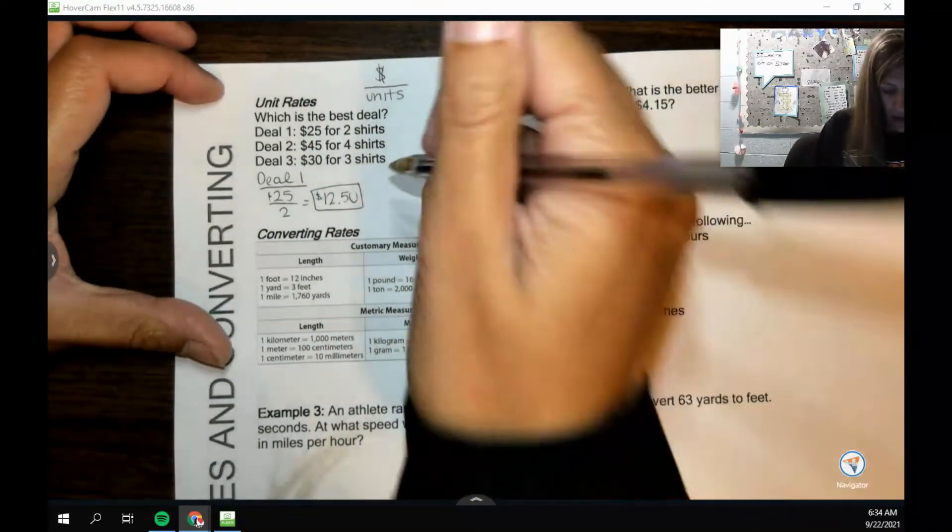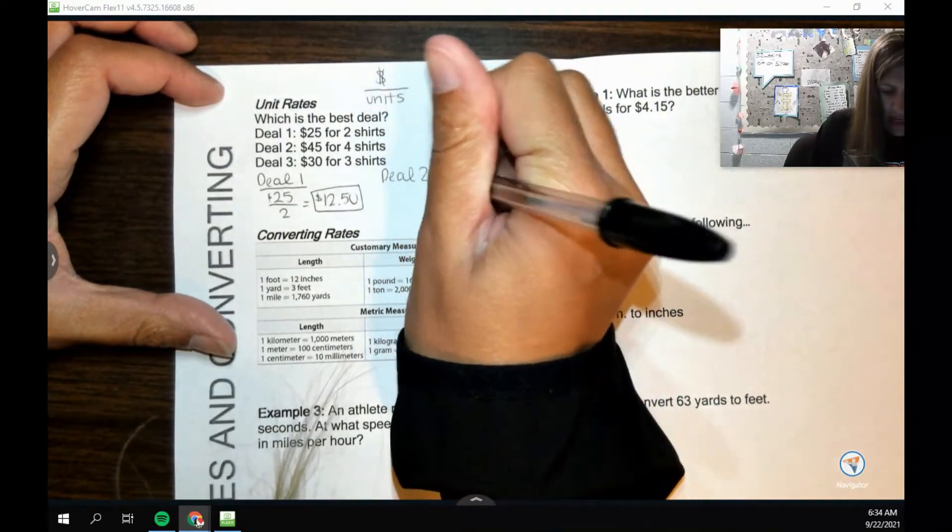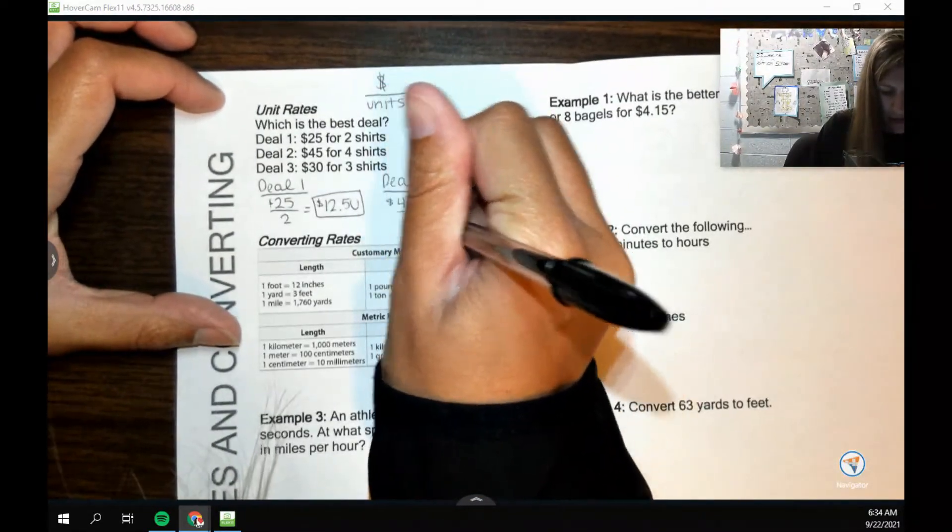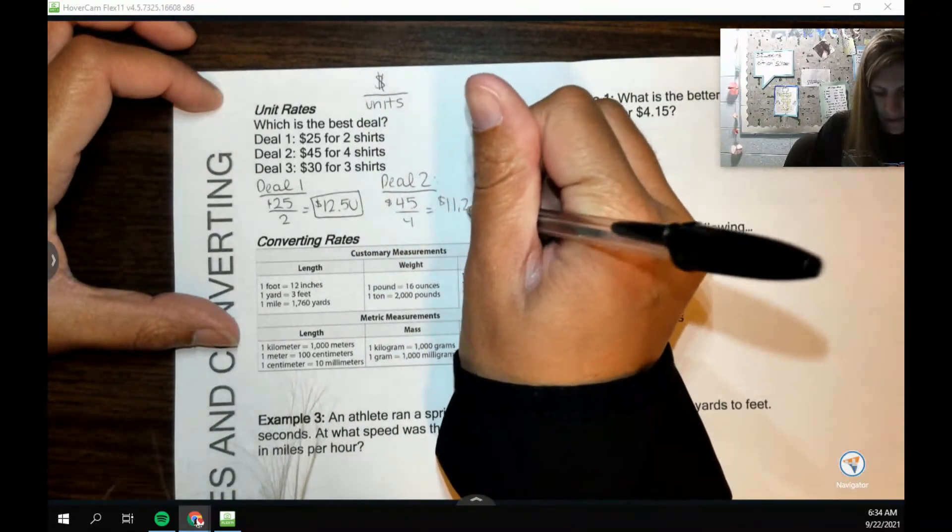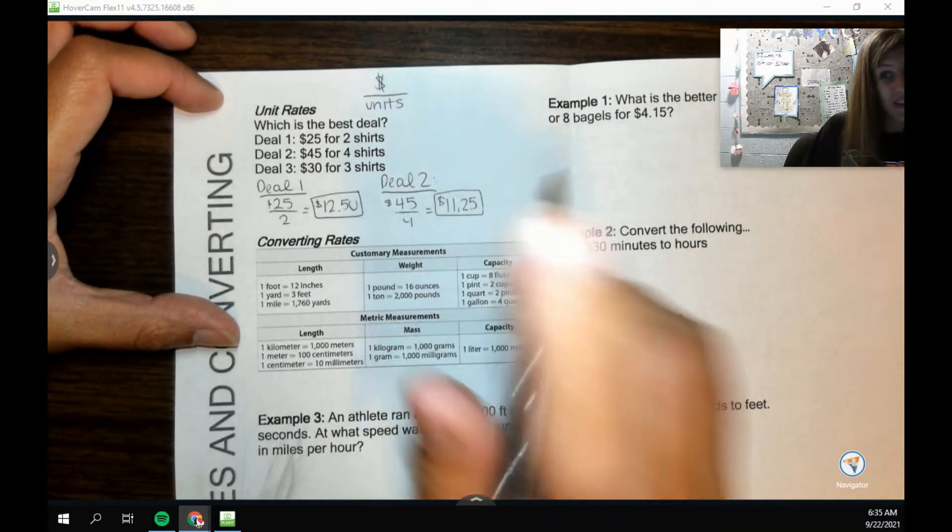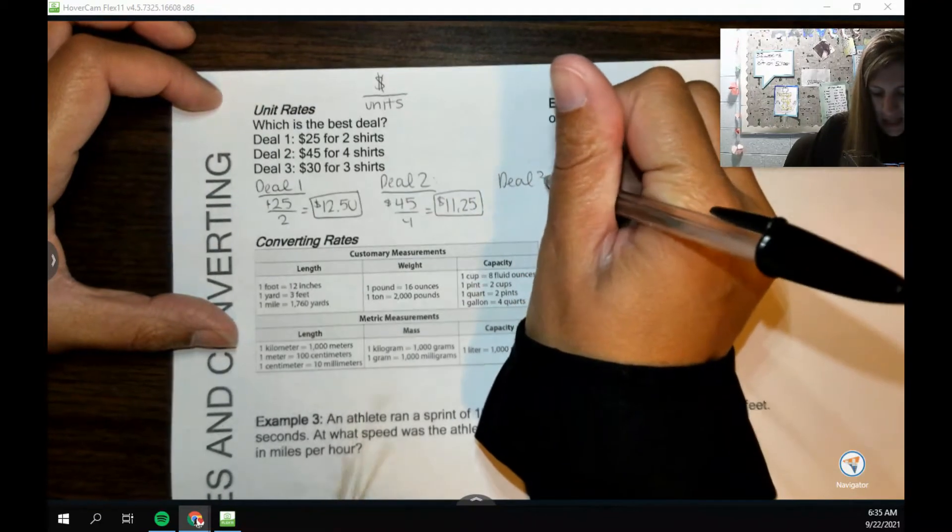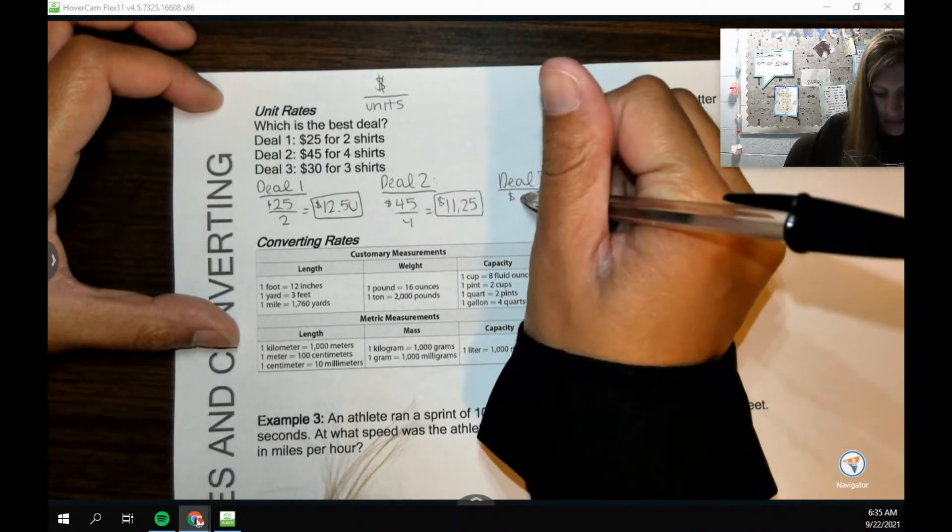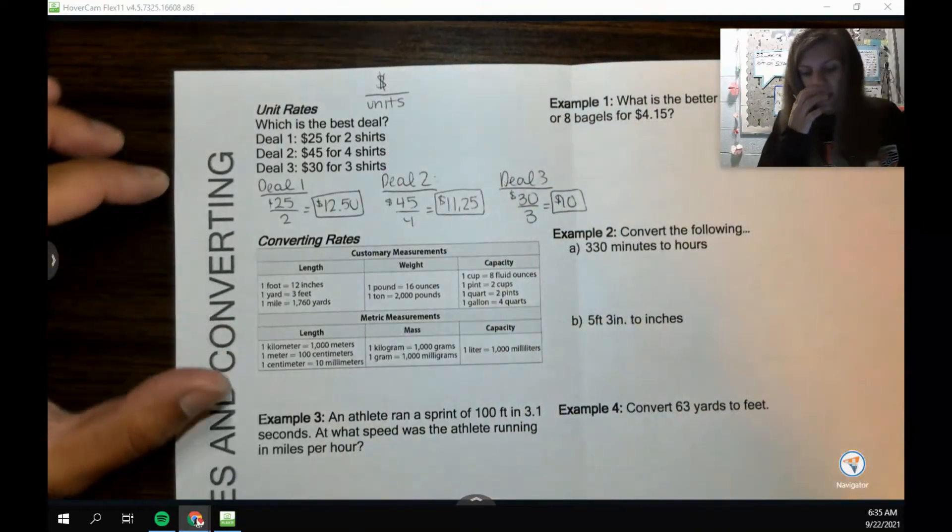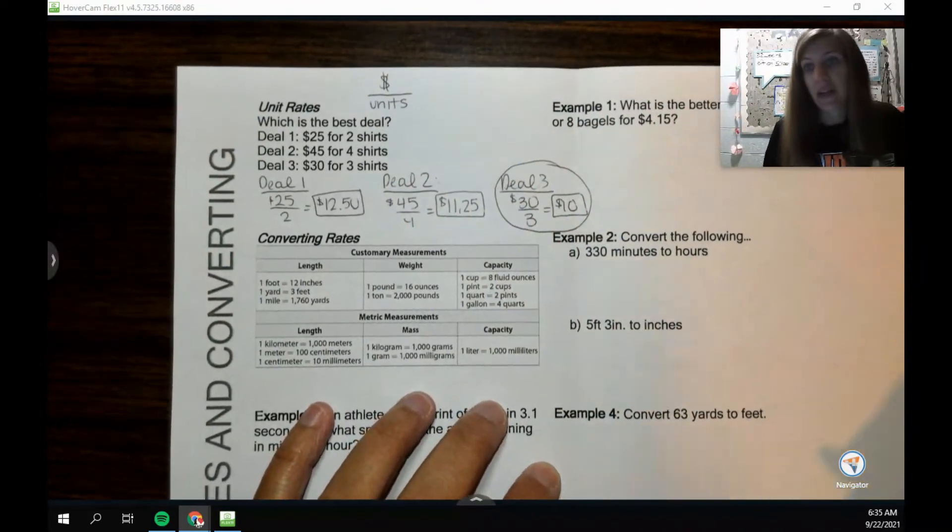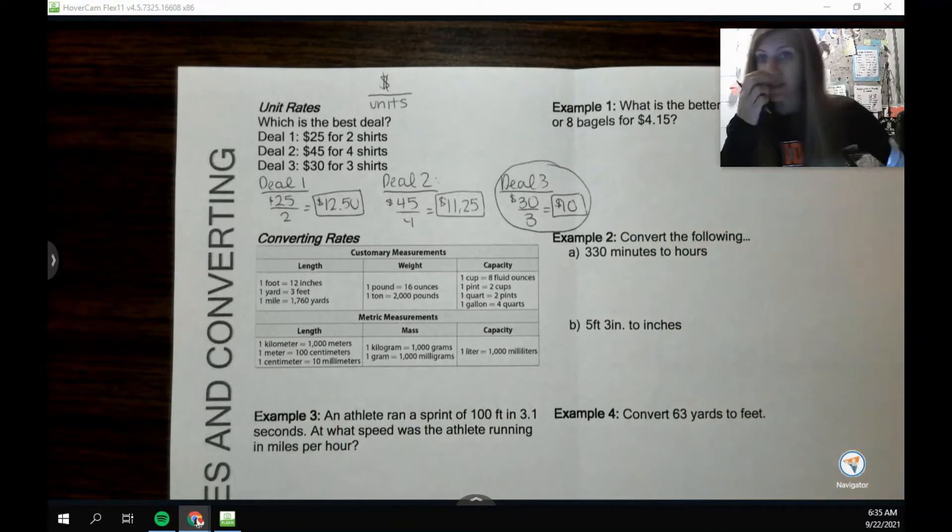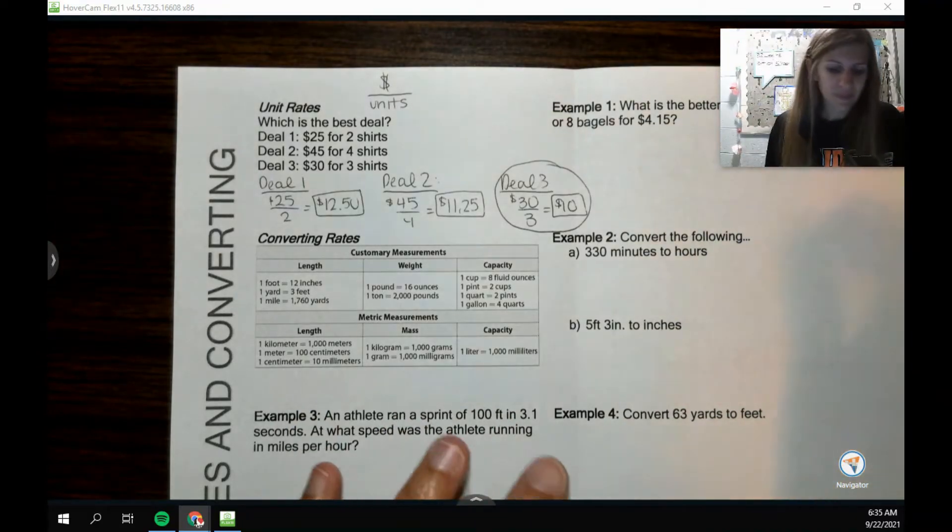Maybe I see another table advertising you'll get four shirts for $45. If I do $45 divided by four, we get $11.25. Deal three at a different table is showing that you'll get three shirts for $30, which is the best deal because that's $10 per shirt.